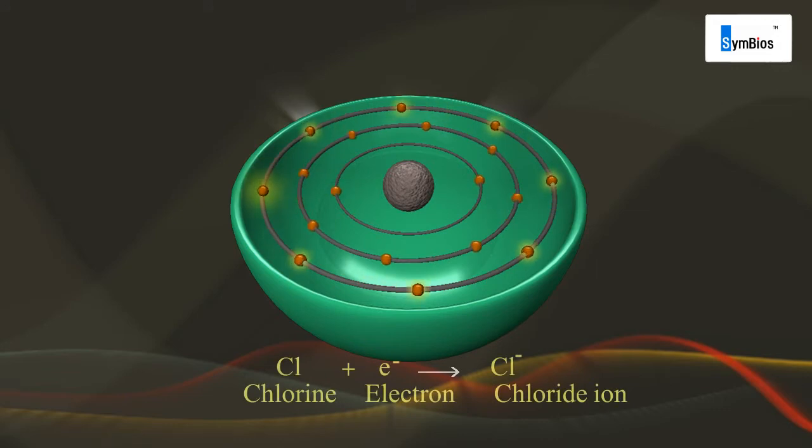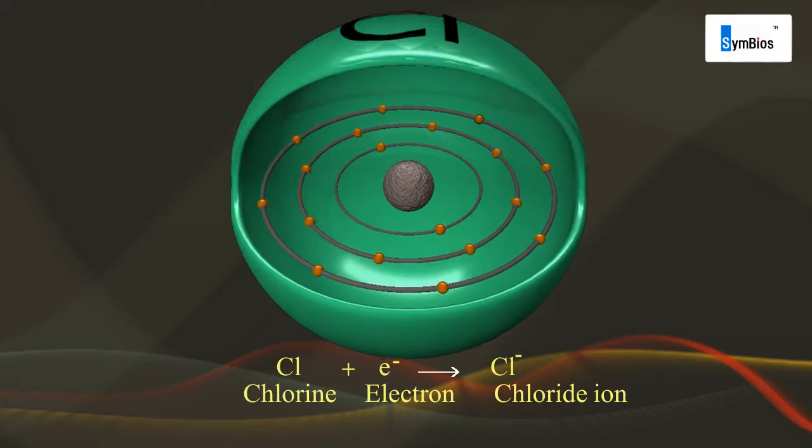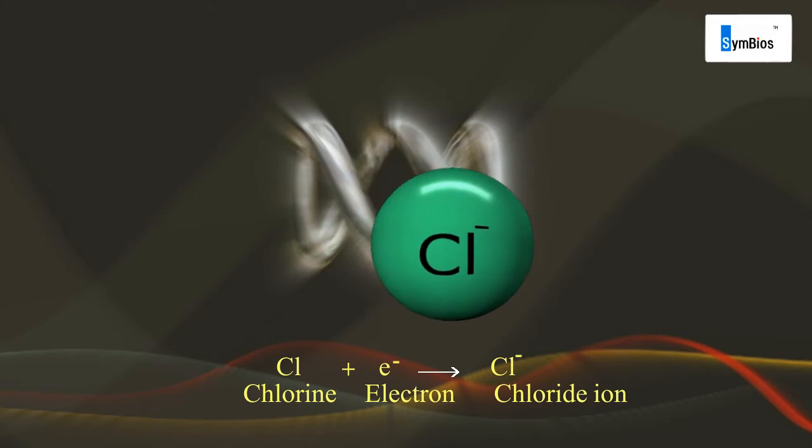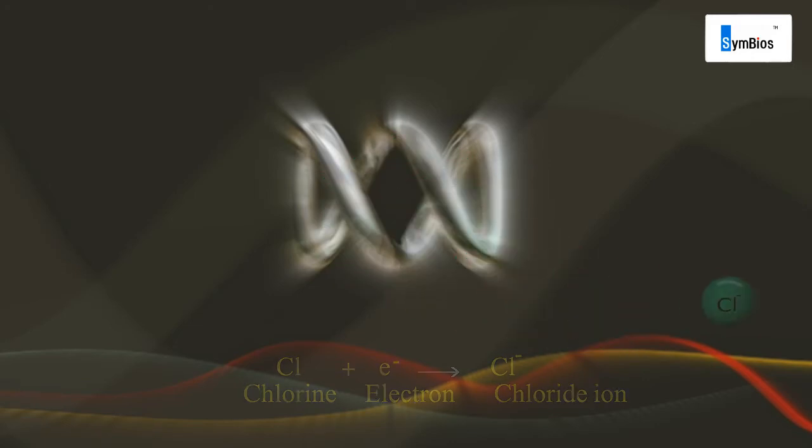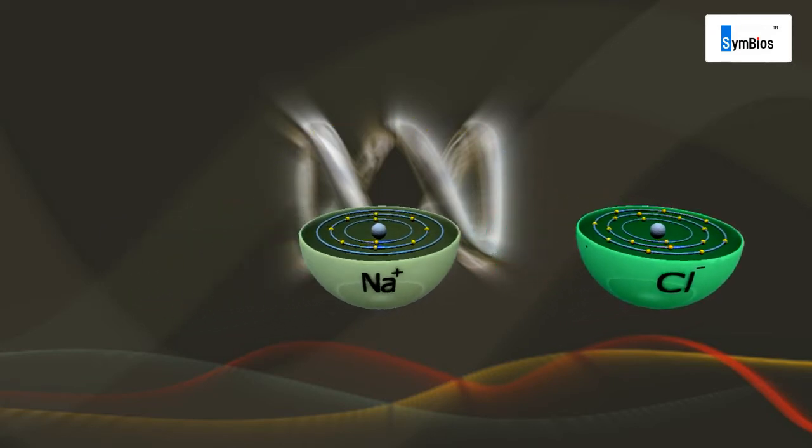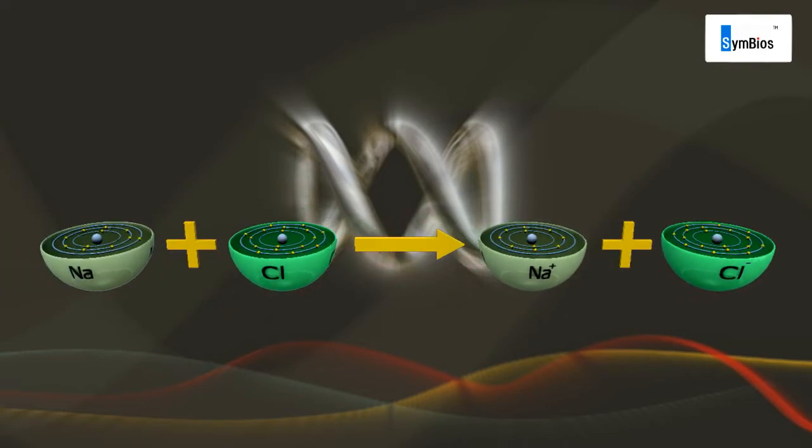So chlorine atom gets one electron to form a negatively charged chloride ion Cl-. Formation of ionic bond: when sodium reacts with chlorine, it transfers its one outermost electron to chlorine atom. By losing one electron, it forms sodium ion Na+.